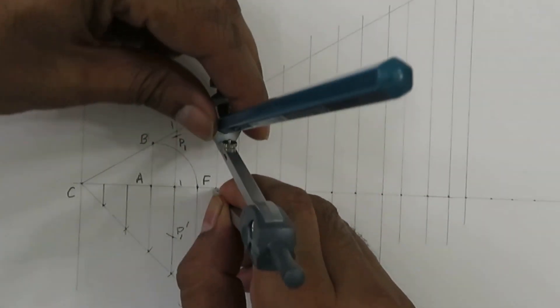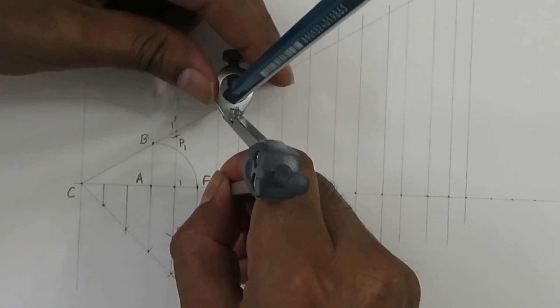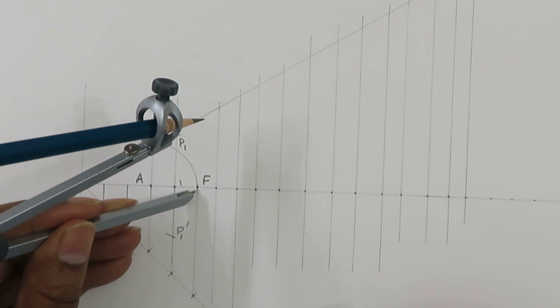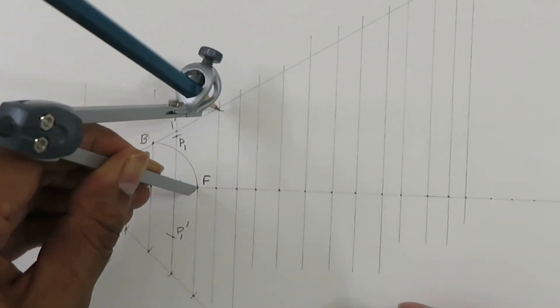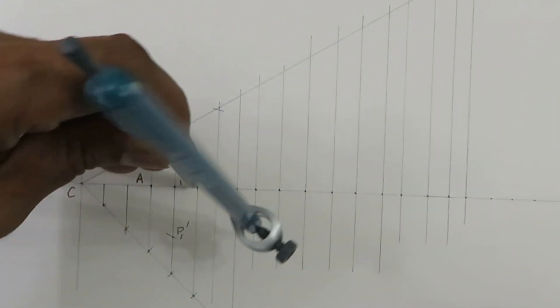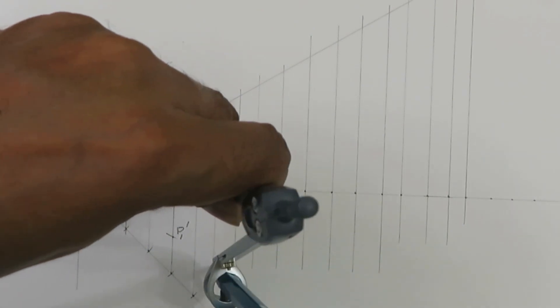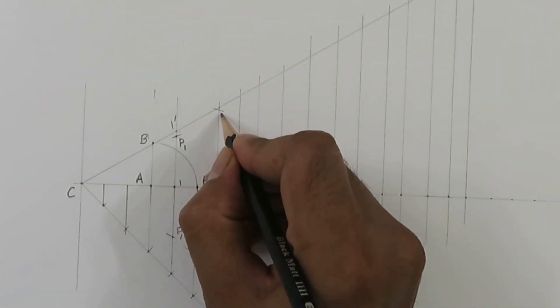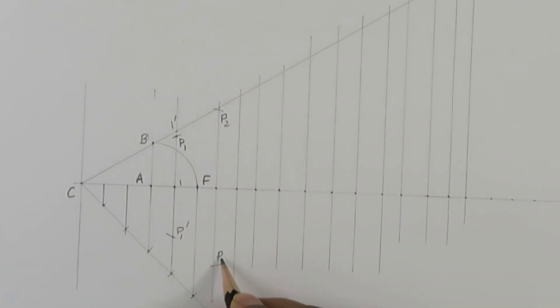Now we will try to find out the second point on the ellipse. We take this distance and from F as the center we cut this, similarly we cut on this side.